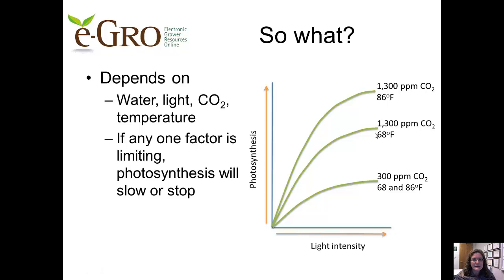Finally, consider carbon dioxide concentration. When it's only 300 parts per million, regardless of the temperature, the photosynthetic rate is much lower than when the CO2 concentration is 1300 parts per million. What's going on is that carbon dioxide concentration is limiting the photosynthetic rate — it's the weakest link. The reason it's important to understand the inputs into photosynthesis is to appreciate that whichever input is limiting will control the rate of photosynthesis and thus plant growth.